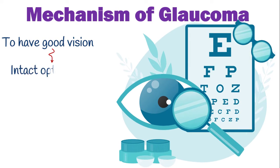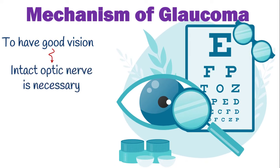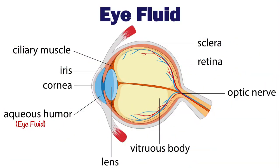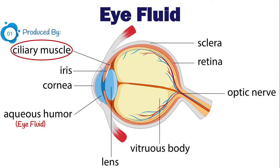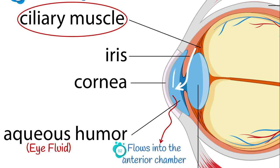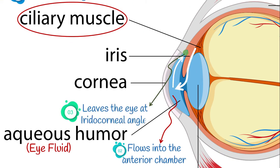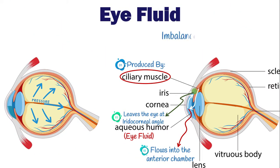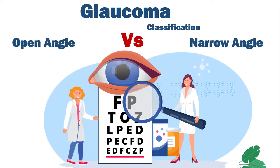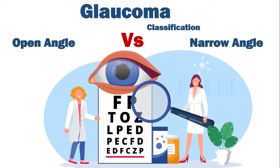To have good vision, an intact optic nerve to relay visual information from the eyes to the brain cortex is necessary. Normally, eye fluid is produced by the ciliary body, then flows through the pupil into the anterior chamber, and finally leaves the eye at the angle between the iris and cornea — the so-called iridocorneal angle. Any imbalance between eye fluid secretion and drainage can affect intraocular pressure and therefore induce glaucoma.